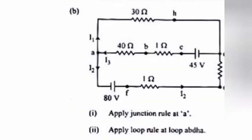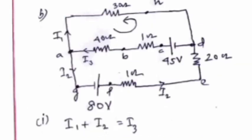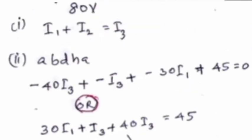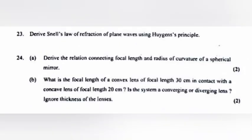Question 22b: Apply (1) junction rule at point A and (2) loop rule at loop ABDHA. Answer: (1) i1 + i2 = i3. (2) Applying the loop rule to loop ABDHA: 30i1 + 40i3 = 45.